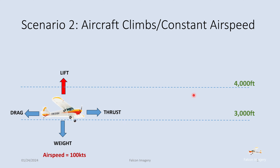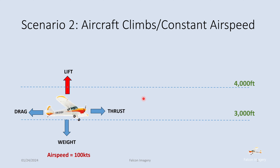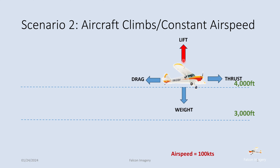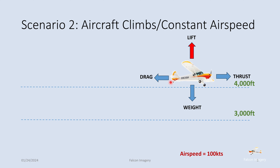Scenario two: an aircraft is climbing at a constant airspeed. You'll see the lift vector component is going to increase as we climb in altitude from 3,000 feet to 4,000 feet — notice the lift vector getting bigger and bigger as we go up. The drag and thrust did not change because we kept the airspeed constant. The weight stayed the same, but the lift vector got bigger due to the climb.